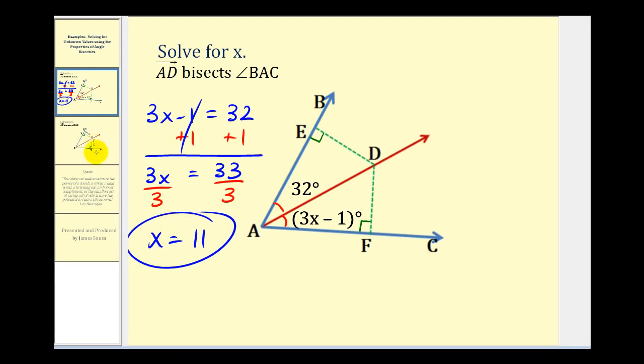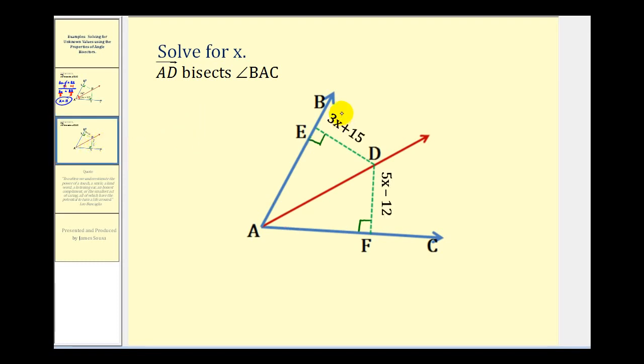Let's go and take a look at one more example. Again, we're given that ray AD bisects angle BAC. So as we just stated, we know that angle BAD is congruent to angle DAF. But it's also true that any point on this angle bisector would be the same distance from either side of the original angle.